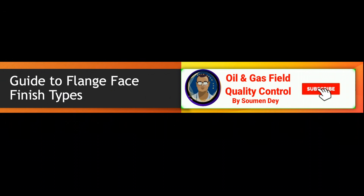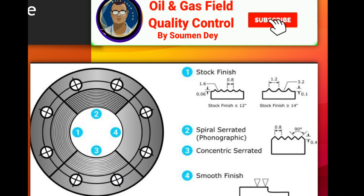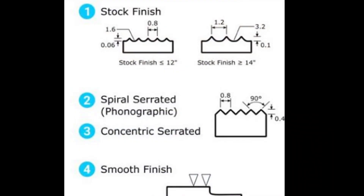We have seen that flange faces have small grooves, also termed as serrations, which are generally made by a special machining process. Flange faces also have different types of finish which are not apparently visible. The flange face surface is the area where the sealing element — that means the gasket — is installed. The most common flange face designs are smooth and serrated flat face, and raised face flange surfaces which require serrations if built to industry standards.